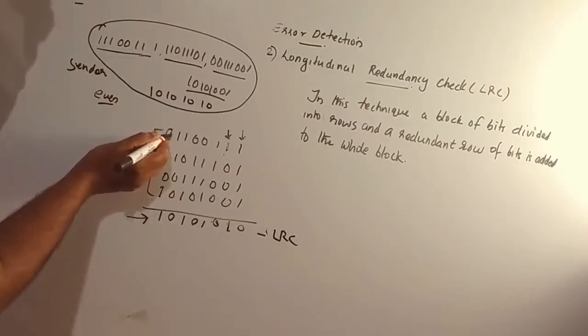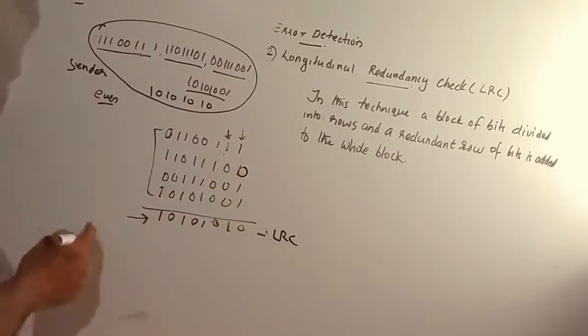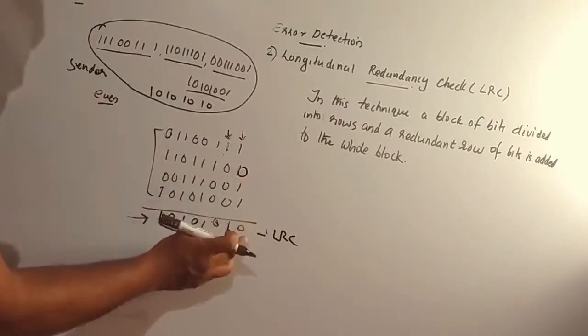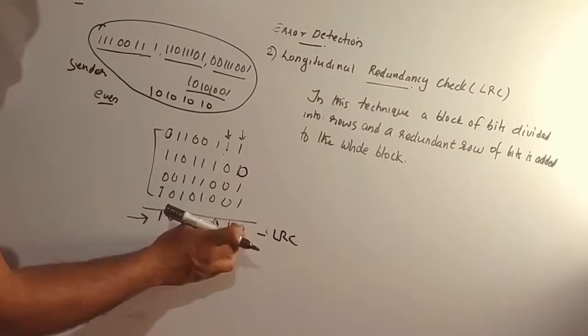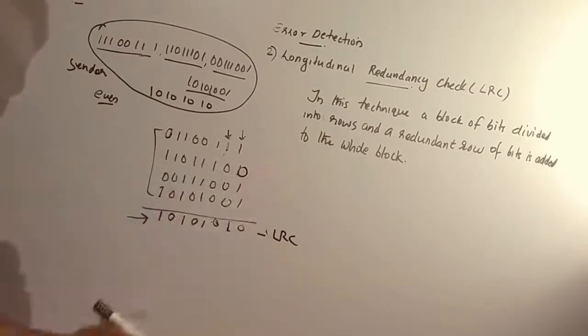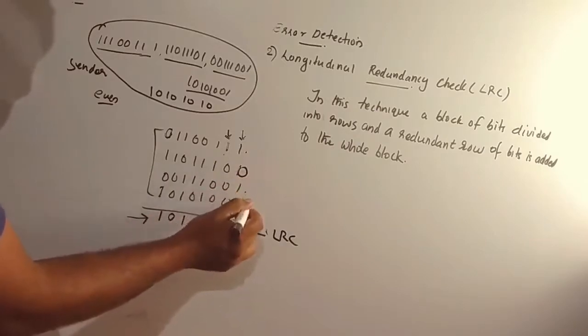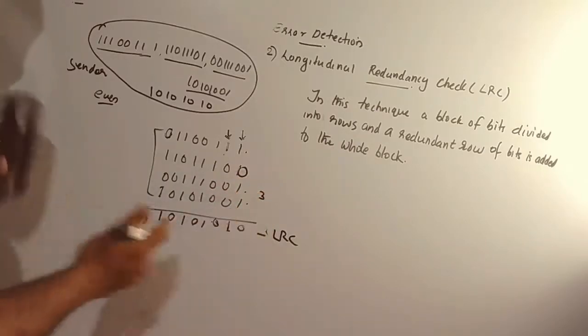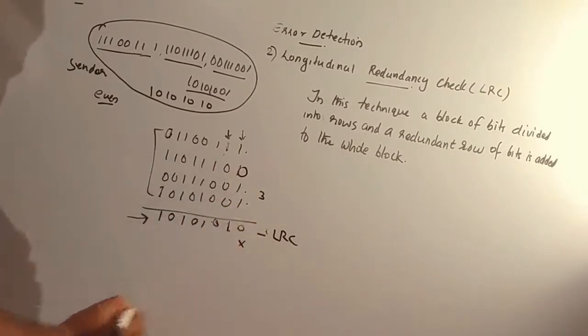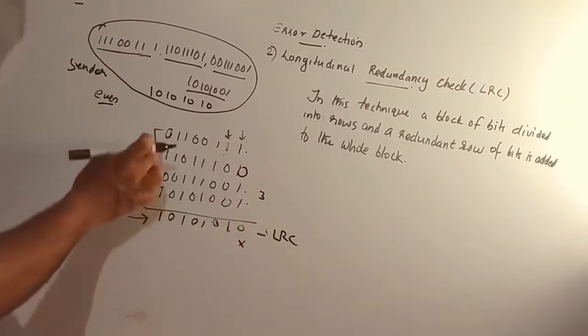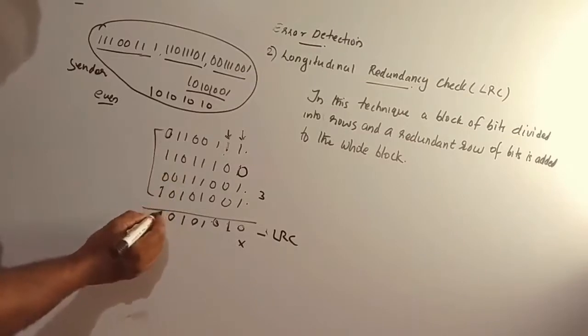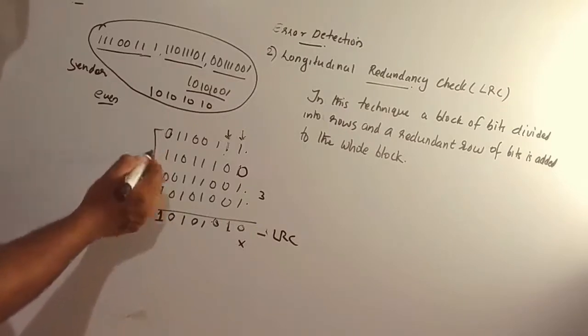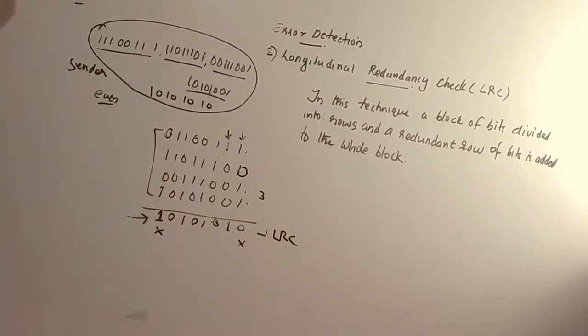If you want to check for errors, you count the number of ones in each column. If the parity matches the received parity bit, there is no error. If it is different, an error is detected.